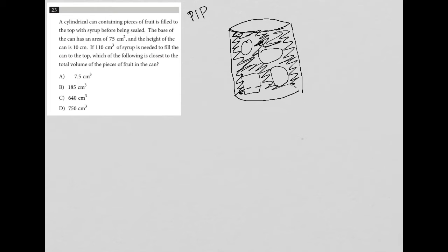The next sentence says the base of the can has an area of 75 square centimeters. We know the base is a circle, and the area of a circle is πr². So if the area of the base is 75, that means πr² = 75.